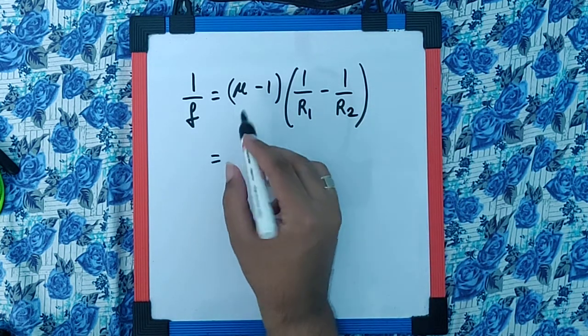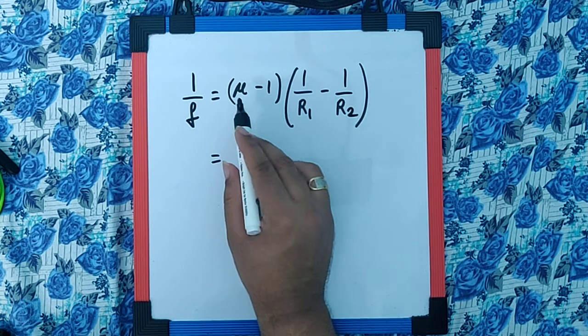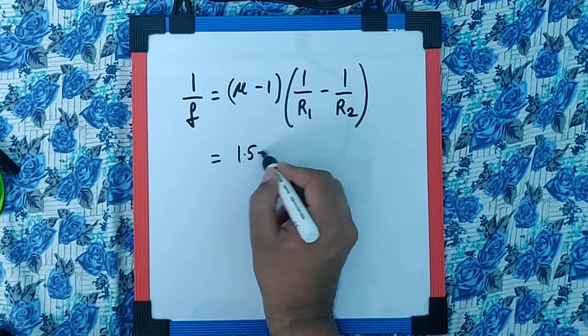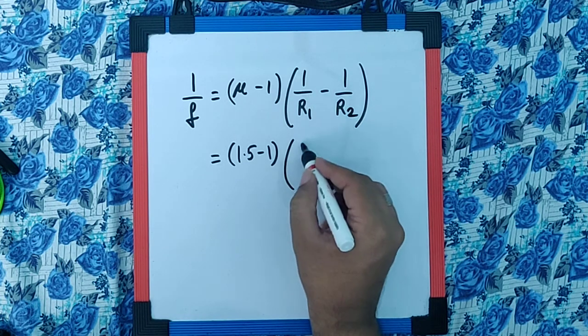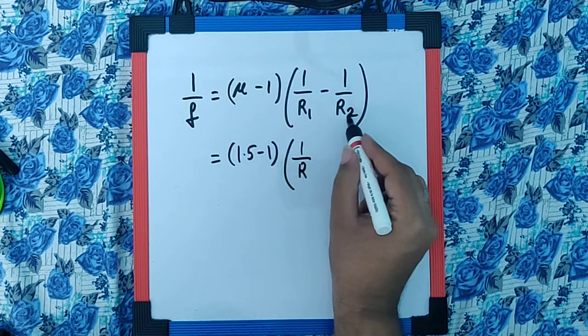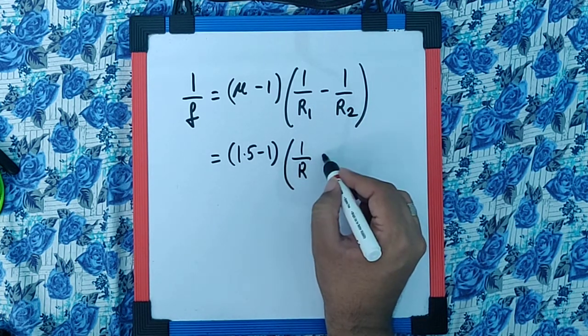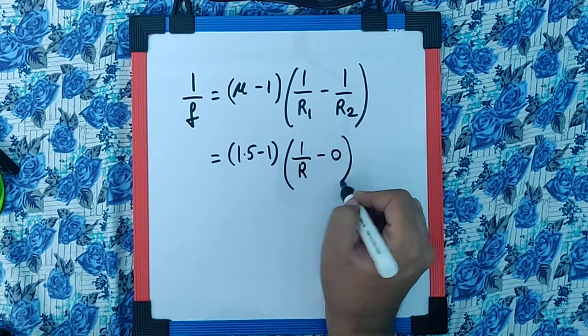Since it's a glass lens, the refractive index given is 1.5. It's a plano-convex lens, so we can assume R1 as positive R. Since it's a plane surface, R2 becomes infinite, the reciprocal of which is 0.